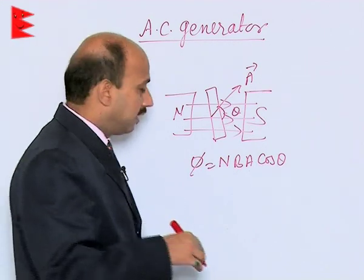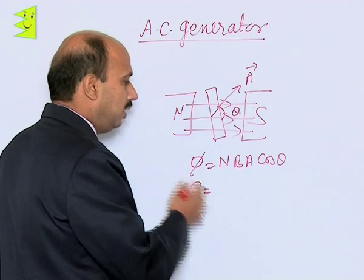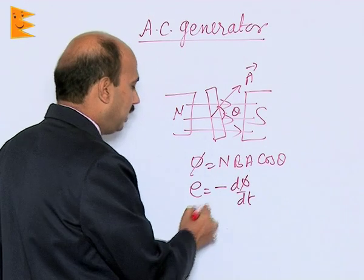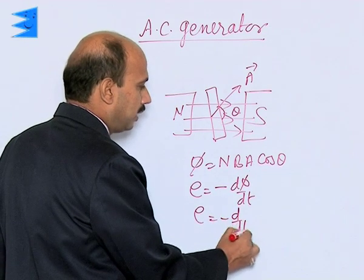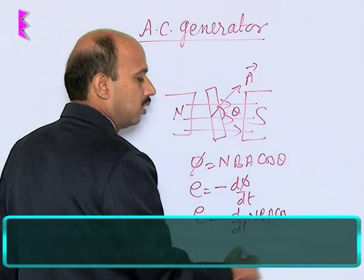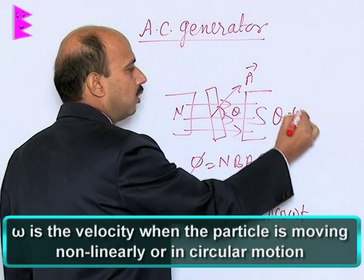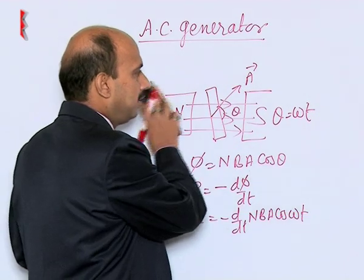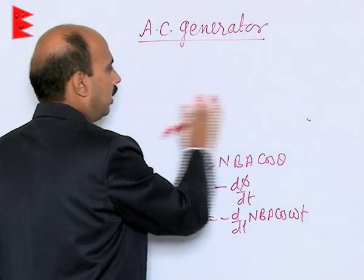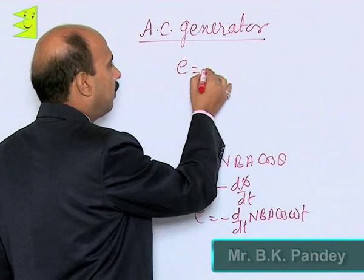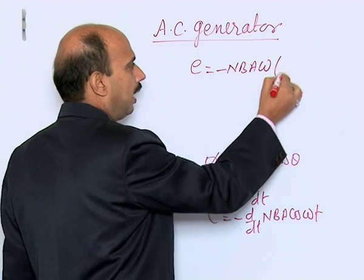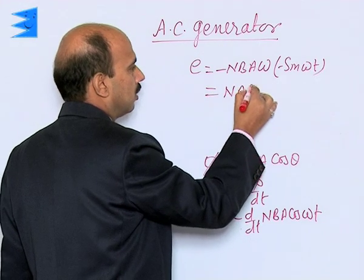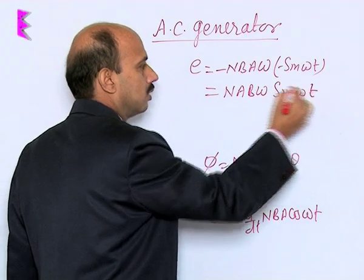When this coil is rotated, magnetic flux changes and the induced EMF is given by E = −dΦ/dt. That can be written as E = −d/dt (NBA cos ωt), because we can write θ = ωt, where ω is the angular velocity of the coil. When we differentiate it, we get induced EMF E = NBA ω sin ωt.